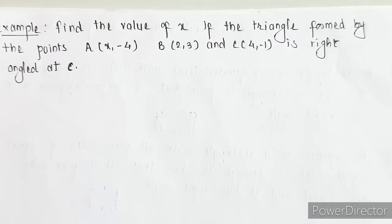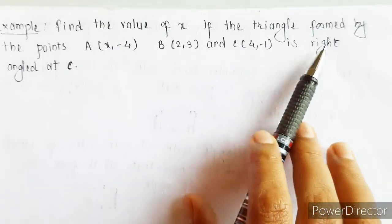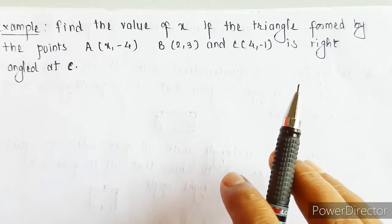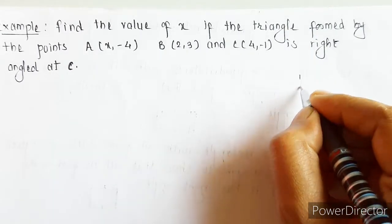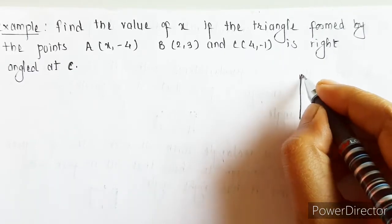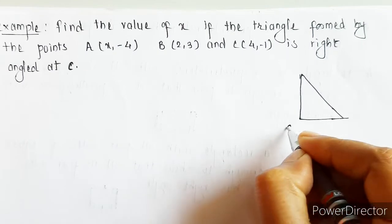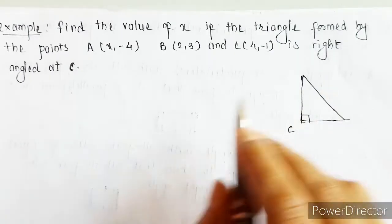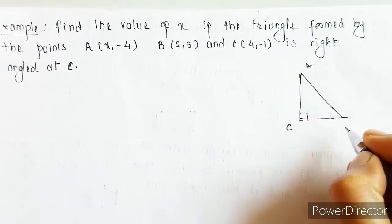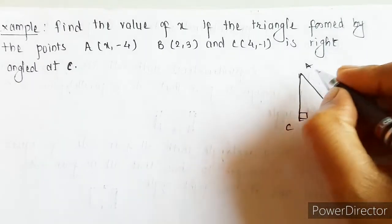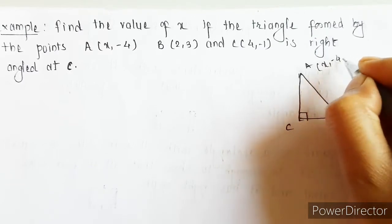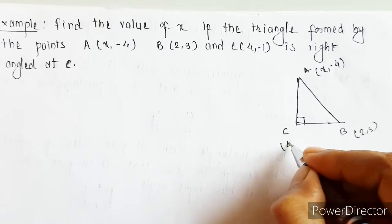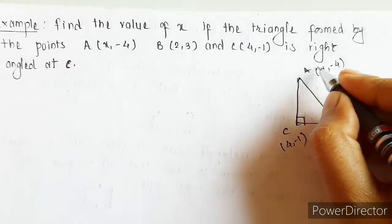Next example on distance formula. We need to find the value of x if the triangle formed by the points A, B and C is a right angle at C. So, what is given is we have a triangle A, B, C and it is making a right angle at point C. Point A is (x, -4), B is (2, 3) and C is (4, -1). We need to find the value of x.